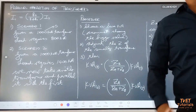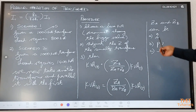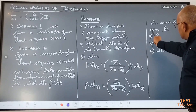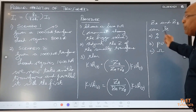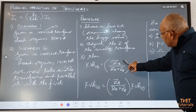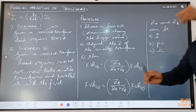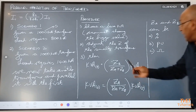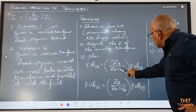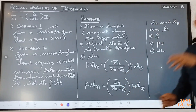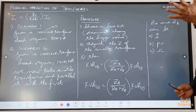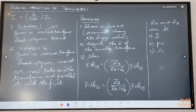ZA and ZB can be percentage, per unit, or ohmic — it doesn't matter. If all the Z's are in percentage form, percentage divided by percentage — the percentage cancels. If it's per unit divided by per unit, it's only a ratio. That is all you need. Let's do an example.